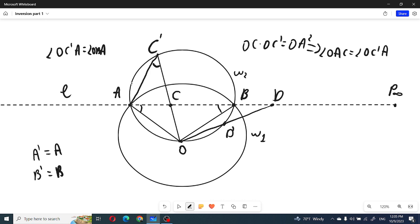So this omega 2 will convert to L line. And what can we say about the line which passed through the O?